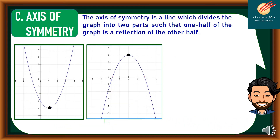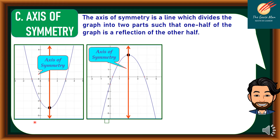So let's move on to the third property, which is the axis of symmetry. The axis of symmetry is a line which divides the graph into two parts such that one half of the graph is a reflection of the other half. So if we consider this illustration, this line is the axis of symmetry.